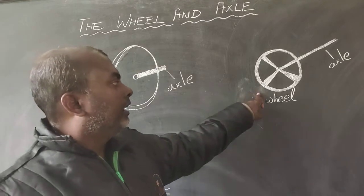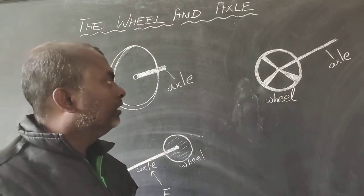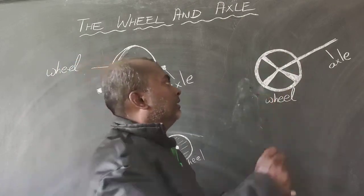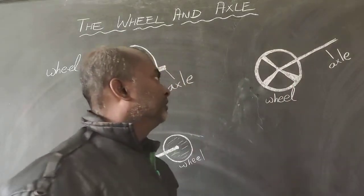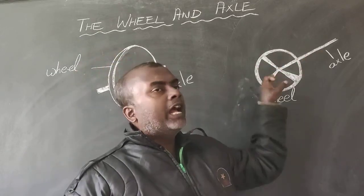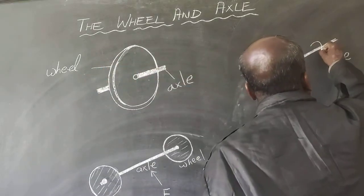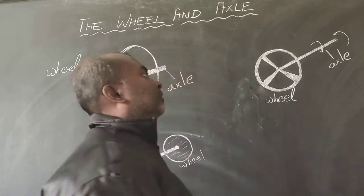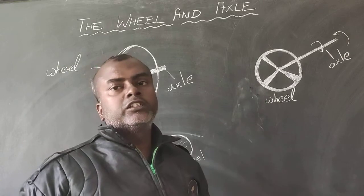Another example is the steering wheel in cars. This is the wheel and here is the axle. Here, what you are doing is turning the wheel — when you turn the wheel, the axle moves this way or that way. So in this case, the wheel is turning the axle.